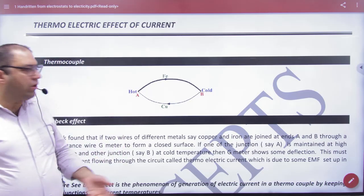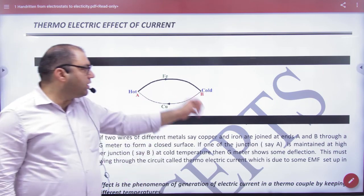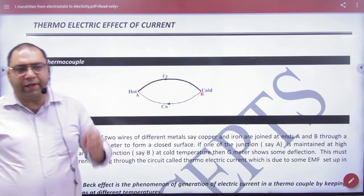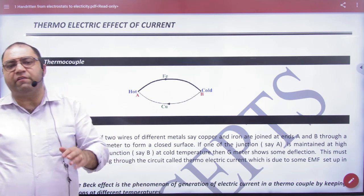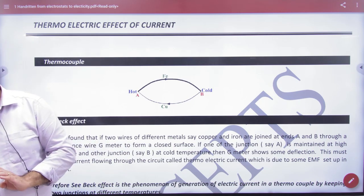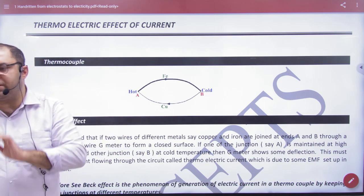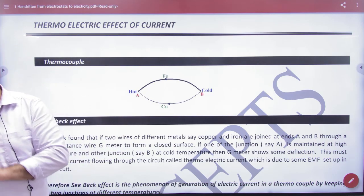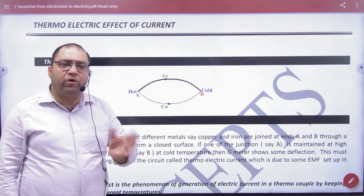If you heat a thermocouple at a junction and heat it up, the temperature difference will give electrons energy and they will diffuse from one metal wire to the other metal wire. When they diffuse and move, then what will happen? Current will flow. It will be very small, but it will happen. So what do we call this effect? Thermoelectric effect of current.